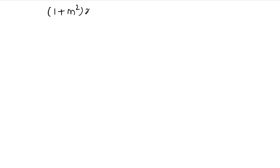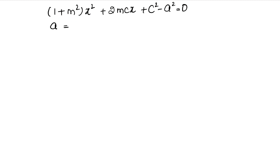Pehle hum kaise solve karenge — uske liye hum equation likhte hain: (1 + m²)x² + 2mcx + (c² - a²) = 0. Hume pata hai roots equal hain, toh hum discriminant nikalenge. To discriminant ke liye a, b, c nikalte hain. x² ke saath ka coefficient A = (1 + m²), x ke saath ka coefficient B = 2mc, aur constant C = (c² - a²).